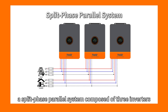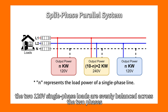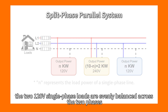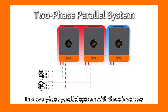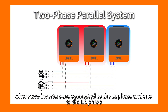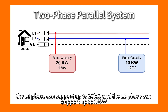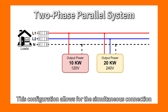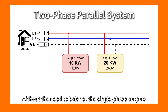For example, a split-phase parallel system composed of three inverters is ideal for scenarios with two 5kW 120V single-phase loads and one 20kW 240V split-phase load. The two 120V single-phase loads are evenly balanced across the two phases, while the remaining capacity from both phases supplies the 20kW split-phase load. In a two-phase parallel system with three inverters — two on L1 and one on L2 — L1 supports up to 20kW and L2 up to 10kW, allowing simultaneous connection of a 20kW 240V split-phase load and a 10kW 120V single-phase load without needing to balance the single-phase outputs.